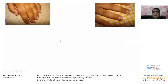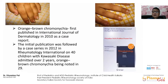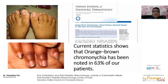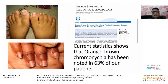An interesting finding we described is color changes in the nails — an orange-brown coloration of the nails that we first described as a case series in Pediatric Rheumatology International in 2011, and subsequently described globally. The final publication came just a month back, 10 years since the original publication, in the Indian Journal of Pediatric Dermatology. This finding is present in almost 60 to 65% of patients, appears in the acute phase, and stays for a substantial amount of time. Please look at the nails — you can come across this finding.